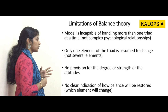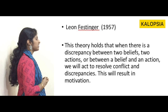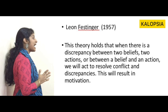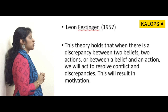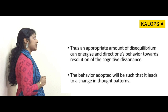Moving on to the cognitive dissonance theory, put forward by Leon Festinger in 1957. This theory holds that when there is a discrepancy between two beliefs, two actions, or between a belief and an action, we will act to resolve the conflict. This results in motivation. An appropriate amount of this disequilibrium can energize and direct one's behavior toward resolution of the cognitive dissonance, and the behavior adopted will lead to a change in thought patterns.